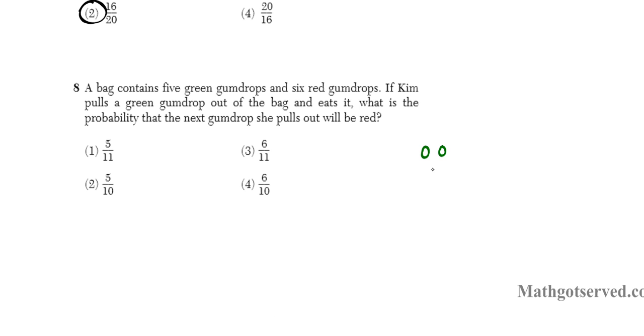So we have 5 green gumdrops. So 1, 2, 3, 4, 5. And then we have 6 red ones. 1, 2, 3, 1, 2, 3. It's always good to have a visual so you can understand what's going on. So what happened is that Kim pulled out a gumdrop from the bag and it happened to be a green one. And she eats it. So what does that mean? Well that means that one of these gumdrops is gone. So this is all we have left. We are left with 4 green gumdrops and 6 red gumdrops.